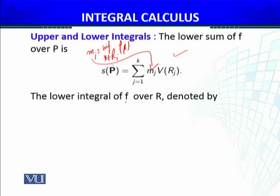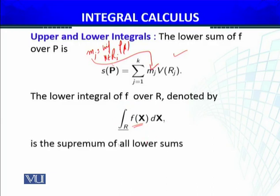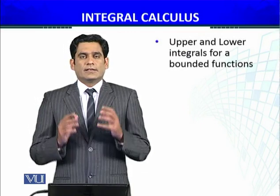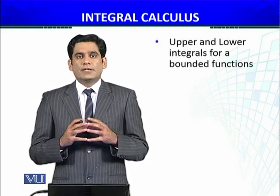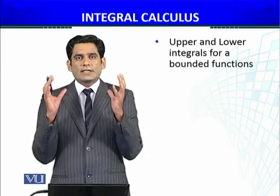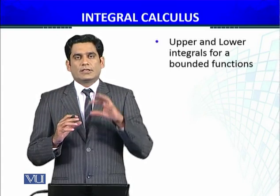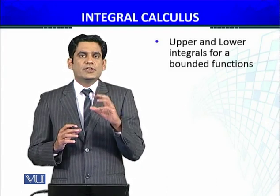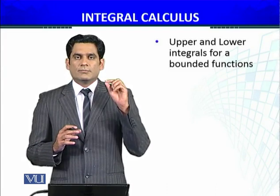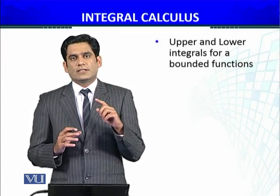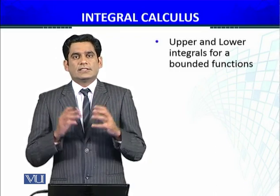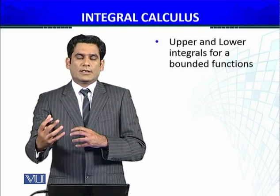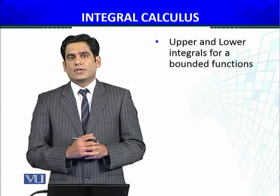The set of lower sums has a supremum, and that supremum is known as the lower integral of F over rectangle R — it is the supremum of all lower sums. In this module, we have defined the Riemann upper sums and lower sums, and using these sets over a given rectangle we have defined the upper integral as the infimum of the set of upper sums, and the lower integral as the supremum of the set of lower sums. We will continue in the next module.